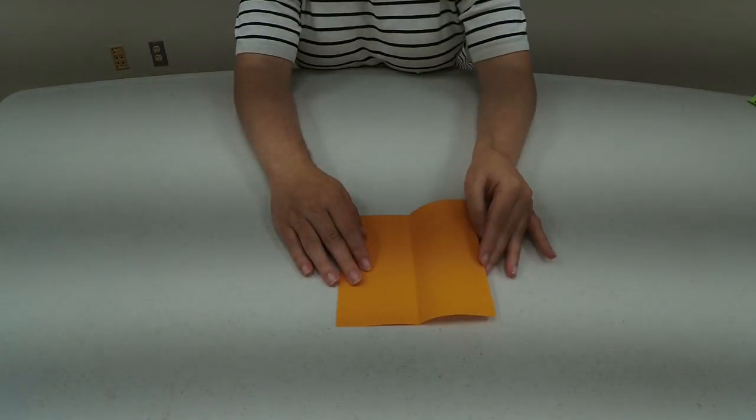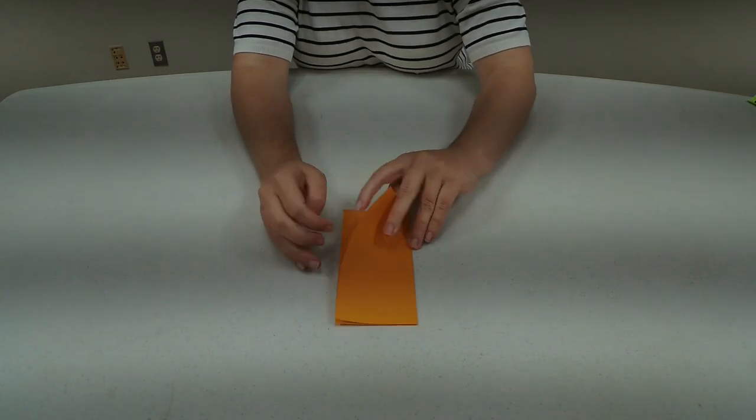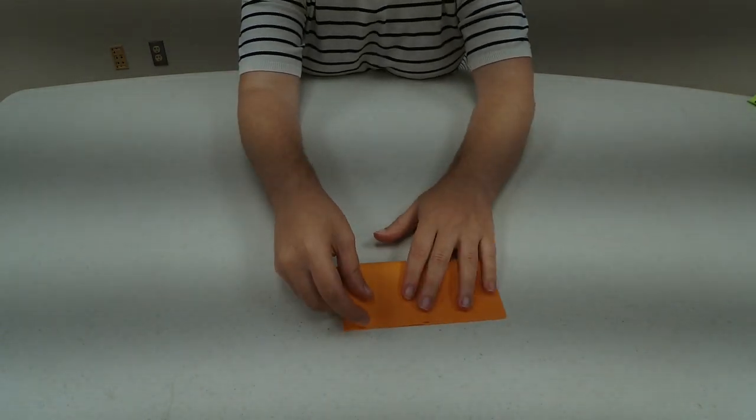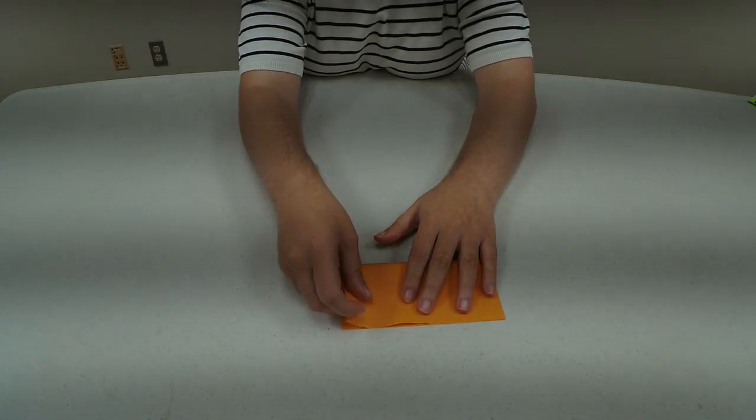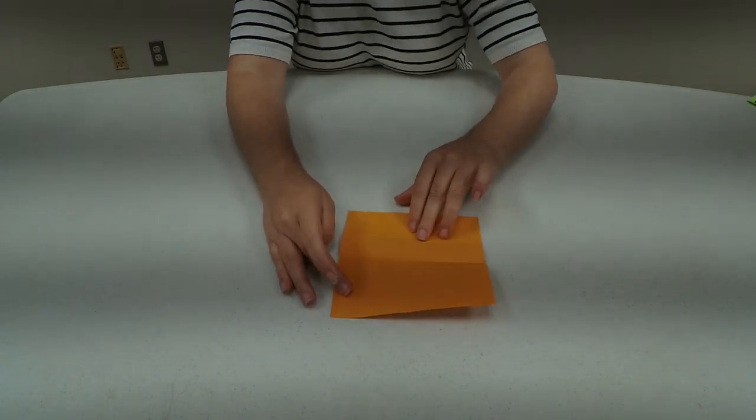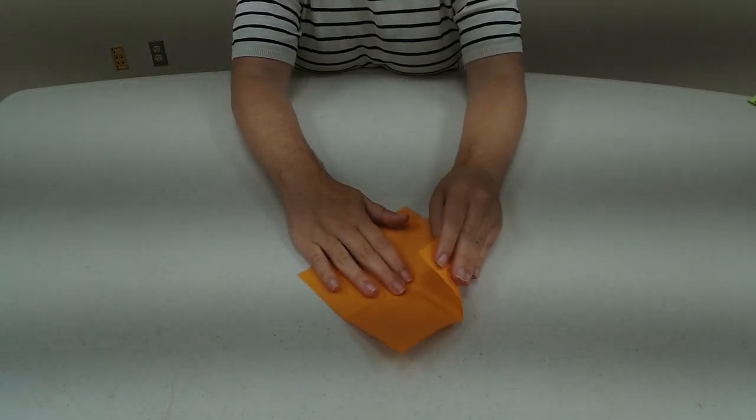You're going to start by folding it vertically and then you will unfold and fold horizontally. Then you will unfold again, turn it so it's a diamond.